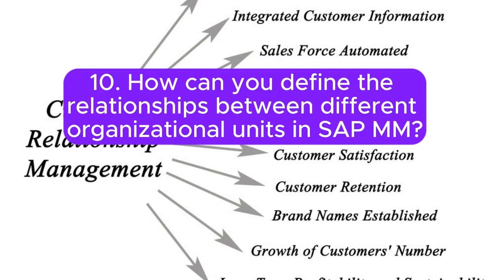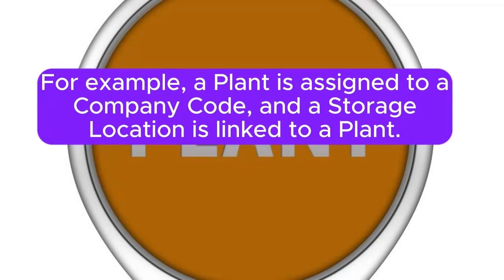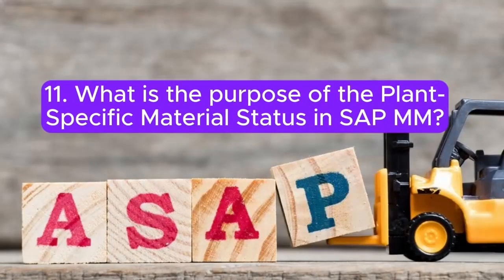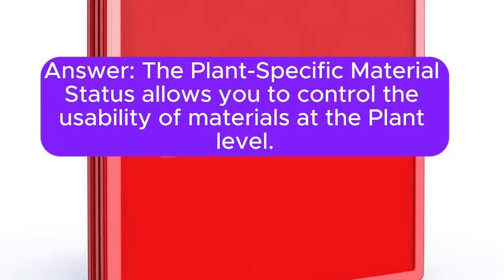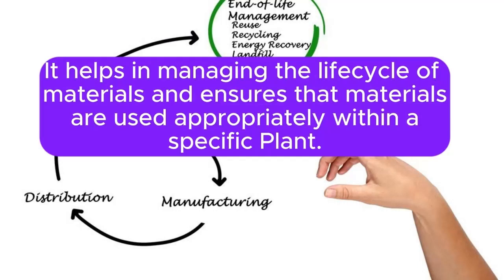Question 10: How can you define the relationships between different organizational units in SAP MM? Relationships are defined using assignment and linkage. For example, a plant is assigned to a company code, and a storage location is linked to a plant. These assignments ensure a hierarchical and interconnected structure. Question 11: What is the purpose of the plant-specific material status in SAP MM? The plant-specific material status allows you to control the usability of materials at the plant level. It helps in managing the life cycle of materials and ensures that materials are used appropriately within a specific plant.